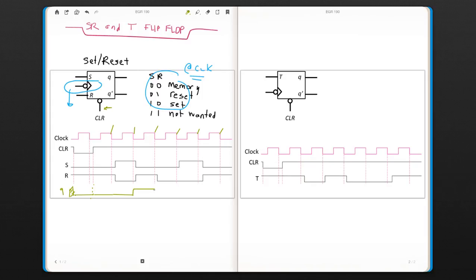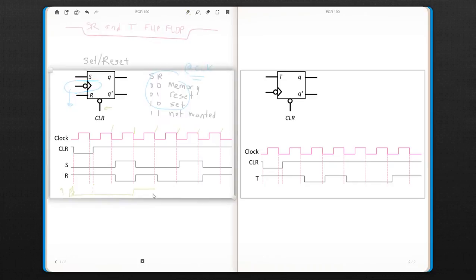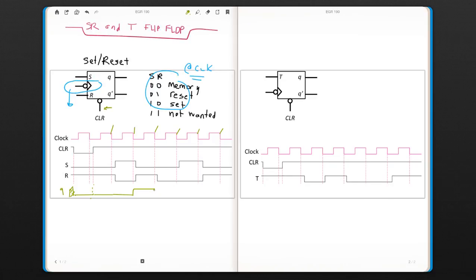Set is 0, R is 1. It's going to change right here, not before that, because it only can happen at the clock transition.